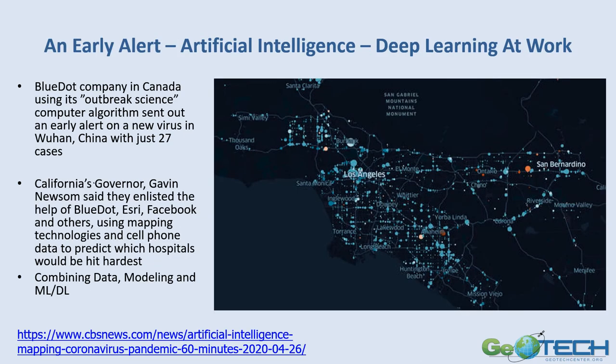One recent example was the BlueDot company in Canada, which had a deep learning algorithm looking at outbreak science. They correctly identified an early alert when there were only 27 cases in Wuhan, China. California Governor Gavin Newsom also used data from BlueDot, Esri, and Facebook, combined with mapping technologies and cell phone data, to predict which hospitals would be hardest hit so they could be prepared — combining data modeling and deep learning to identify hotspot areas.